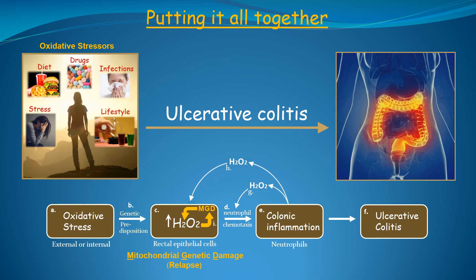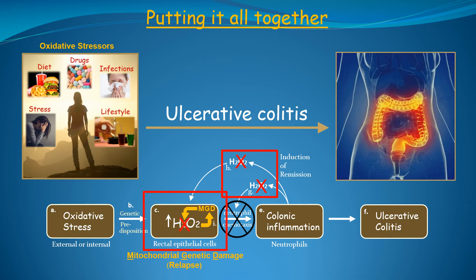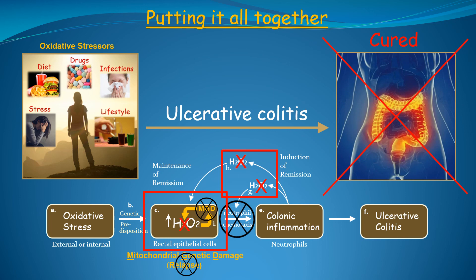This causes colonic epithelial cells to produce ever increasing amounts of hydrogen peroxide over time, which causes relapse after medication is withdrawn. Based on this diagram, we can deduce that elimination of extracellular hydrogen peroxide will completely resolve the colitis, since the absence of hydrogen peroxide in the extracellular space will preclude neutrophil chemotaxis — this has been called induction of remission. However, to prevent relapse, we need to eliminate excess hydrogen peroxide within colonic epithelial cells, called maintenance of remission. Finally, to effectuate a cure, we need to correct the mitochondrial genetic damage responsible for relapse. When this is accomplished, ulcerative colitis is cured because colonic epithelial cells will no longer generate excess hydrogen peroxide to attract neutrophils and cause relapse.